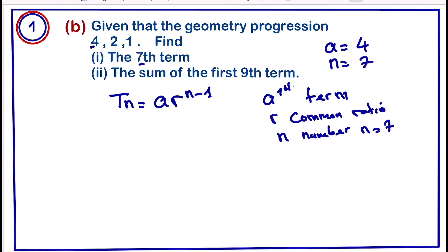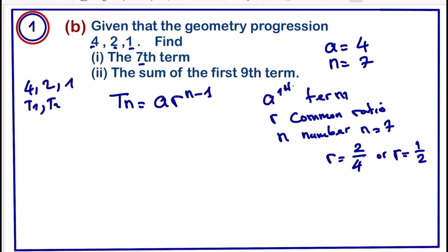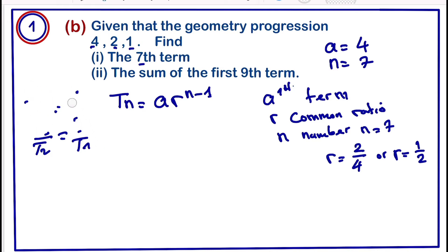The common ratio r can be found by dividing the second term by the first term, or the third term by the second term. So r = T2 / T1 = 2 / 4 = 1/2. We can also verify: T3 / T2 = 1 / 2 = 1/2. Both give the same result, confirming r = 1/2.